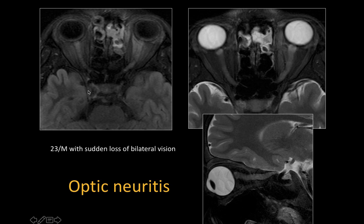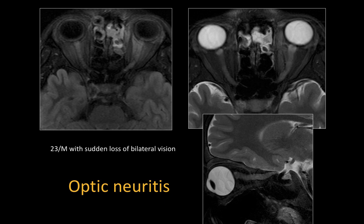This is a 23-year-old male who had sudden onset of bilateral vision loss. We see FLAIR and T2 hyperintense signal involving both the optic nerves along almost the entire extent of the intraorbital part. A sagittal image shows complete involvement of the optic nerve. This is optic neuritis — the nerve is swollen and there is effacement of the subarachnoid space in the optic nerve sheath.